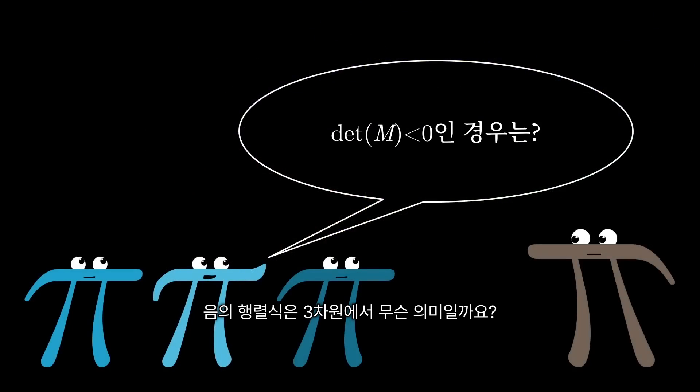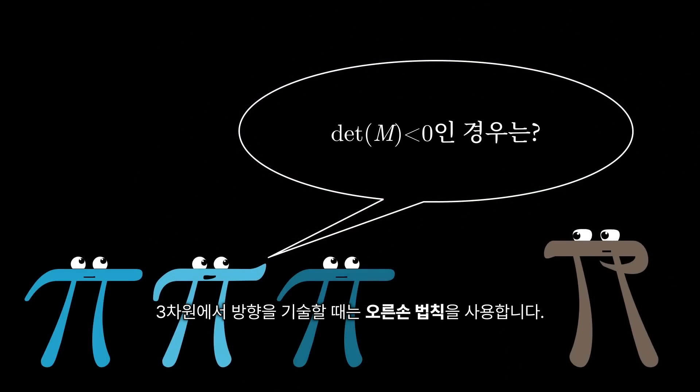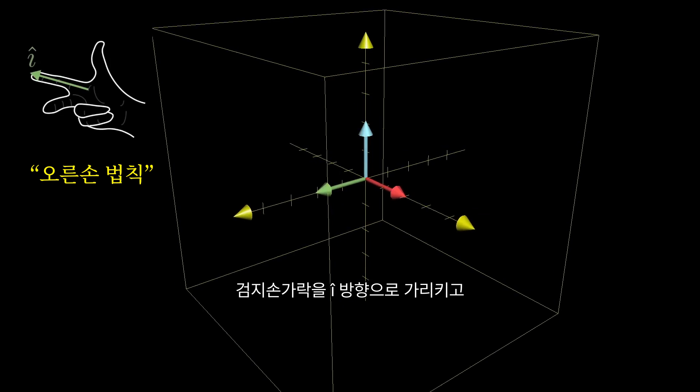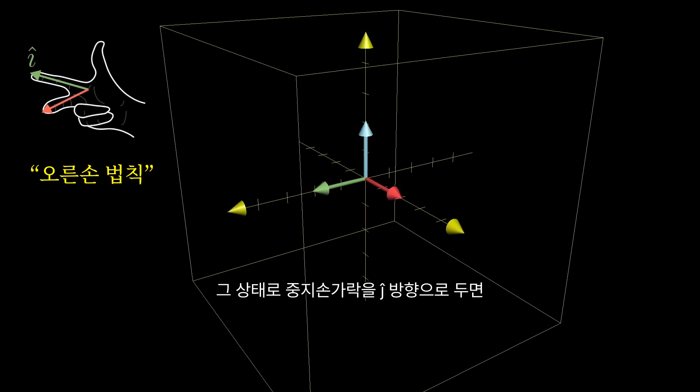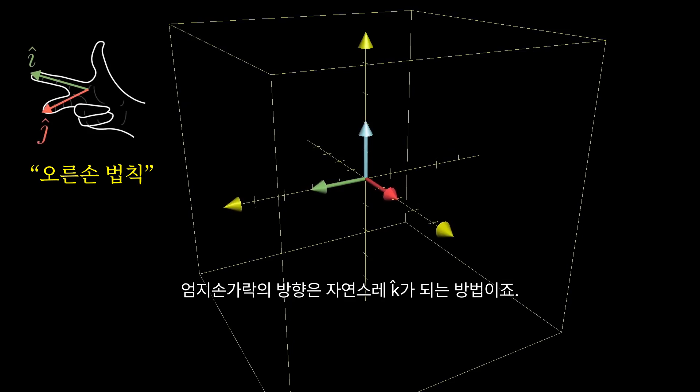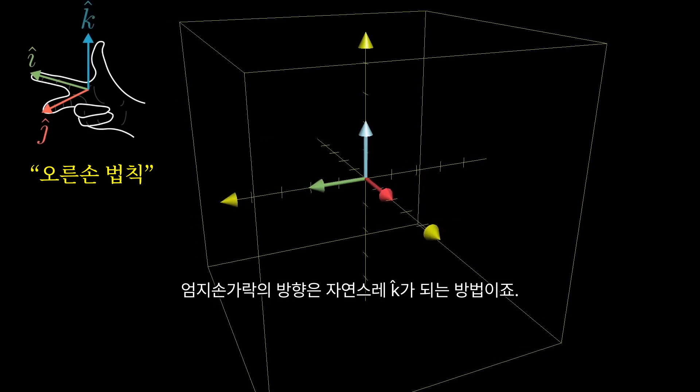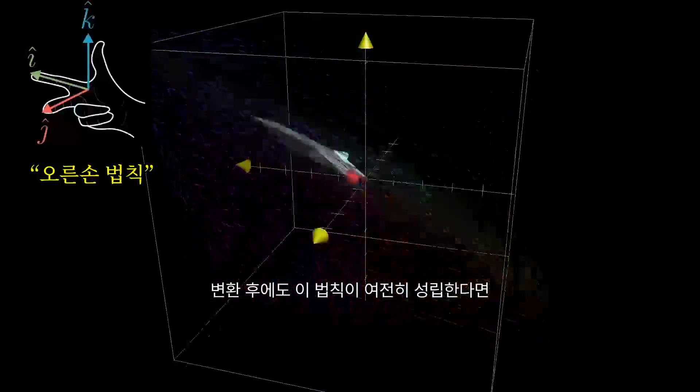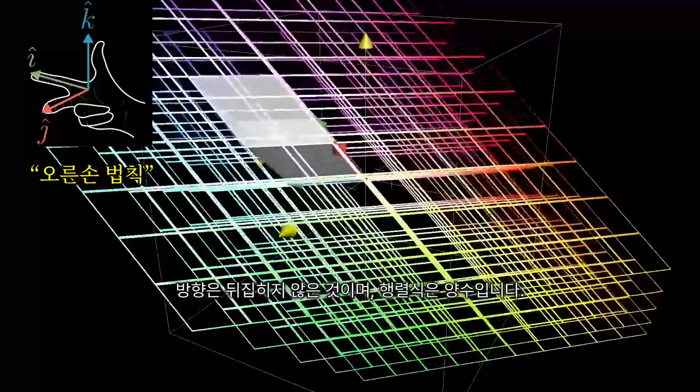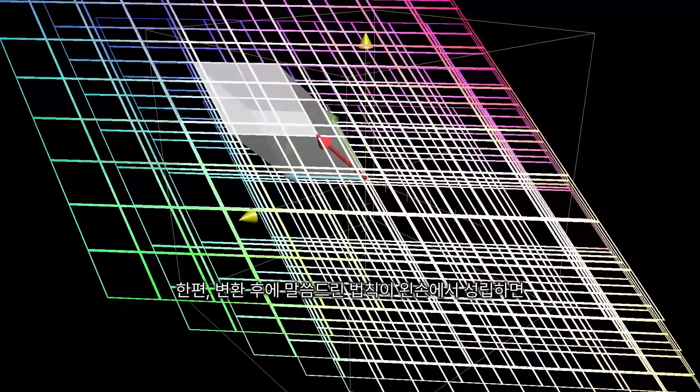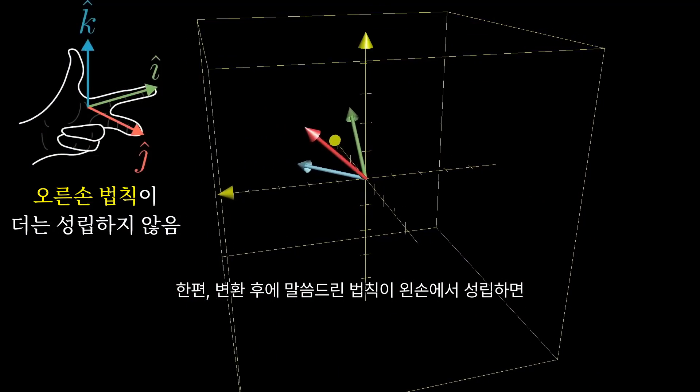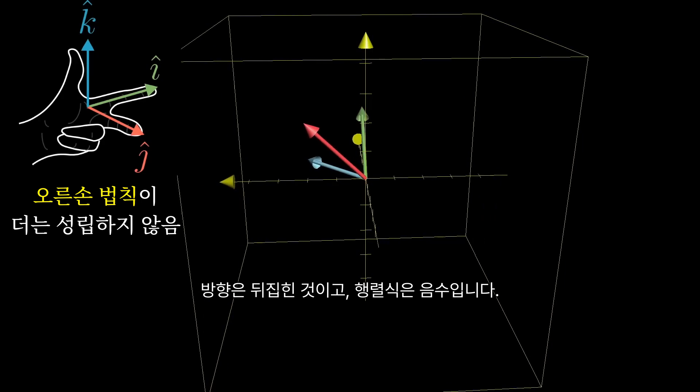What about negative determinants? What should that mean for three dimensions? One way to describe orientation in 3D is with the right hand rule. Point the forefinger of your right hand in the direction of i-hat, stick out your middle finger in the direction of j-hat, and notice how when you point your thumb up, it's in the direction of k-hat. If you can still do that after the transformation, orientation has not changed, and the determinant is positive. Otherwise, if after the transformation it only makes sense to do that with your left hand, orientation has been flipped, and the determinant is negative.